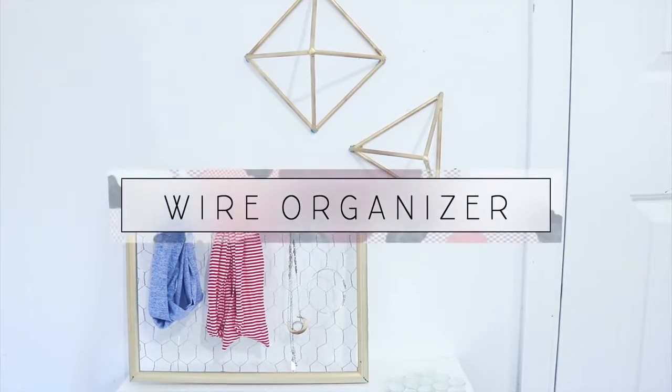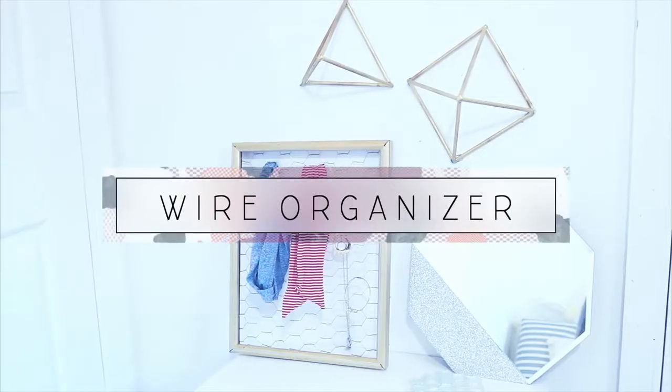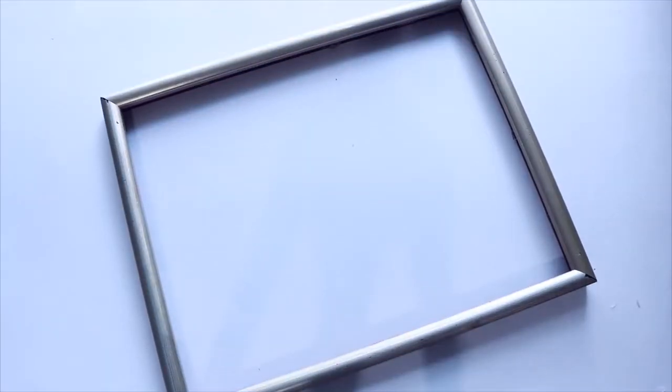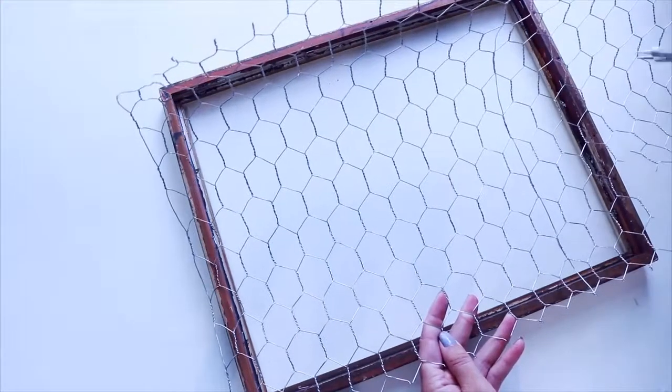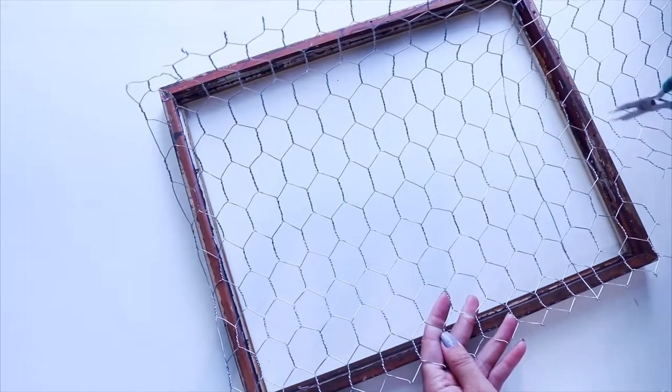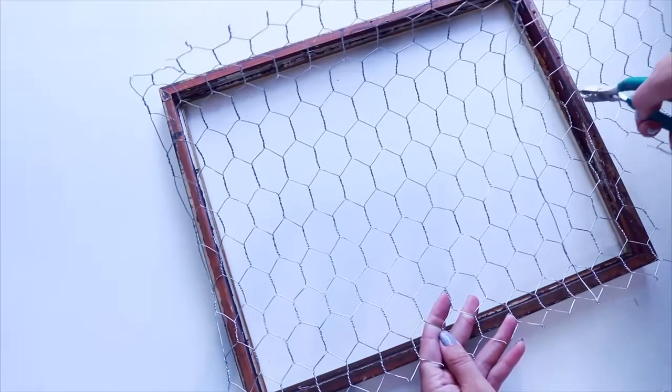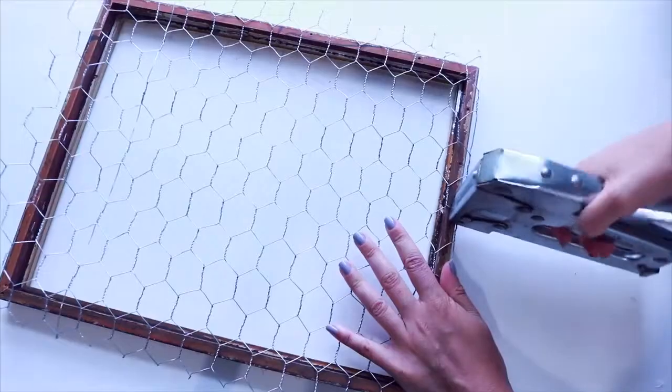Lastly I have this decor piece which doubles up as organization for your room and I'm using it to store my accessories and jewelry, so here's how to make it. I took a frame that I got in a thrift store and made sure it was empty on the inside and then cut some chicken wire to be just bigger than the frame. If you want to make this easier on yourself cut it the exact size of the frame but I just wanted to make sure I had excess space.